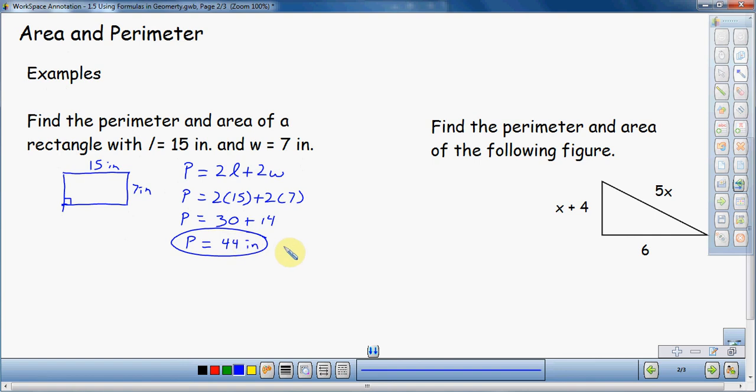Don't forget your label there. Now in the past, I said make sure to actually answer the question. If you use a capital P equals 44 inches, capital P is commonly referred to as perimeter in most every mathematics book. So this is okay to use, capital P for perimeter.